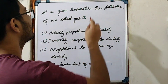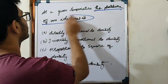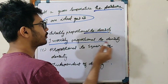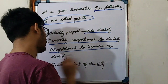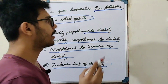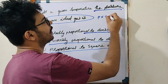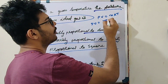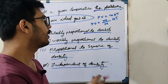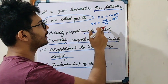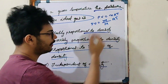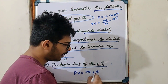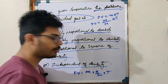The next question: given temperature, what is the pressure of an ideal gas? The ideal gas law is PV equals nRT. We can write this as PV equals given mass divided by molecular mass into R into T.